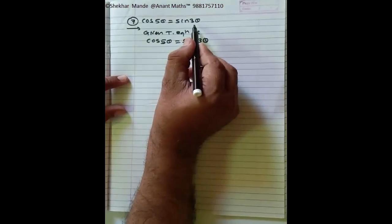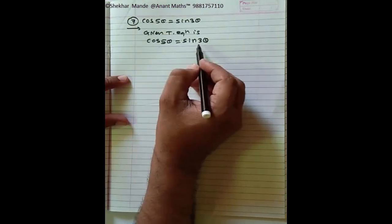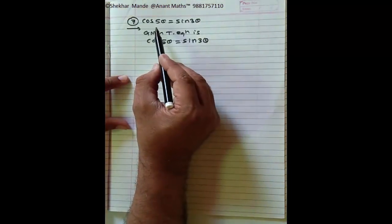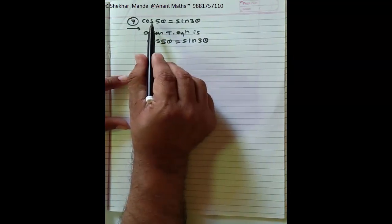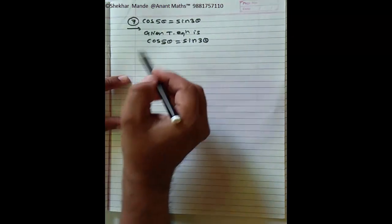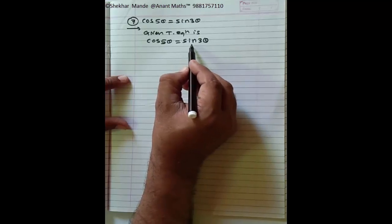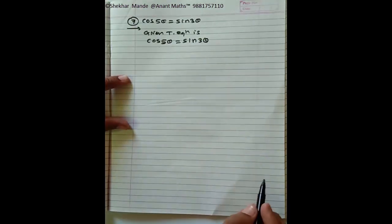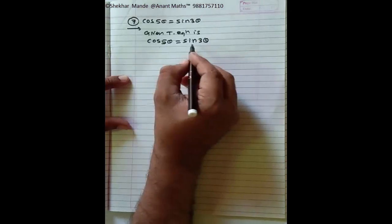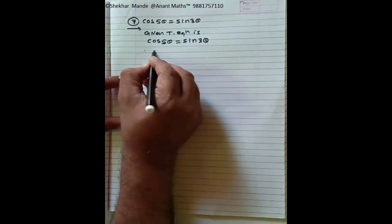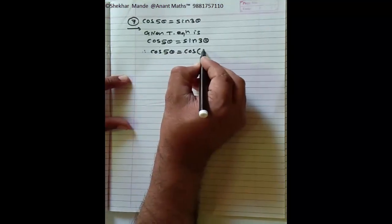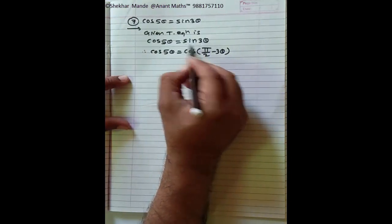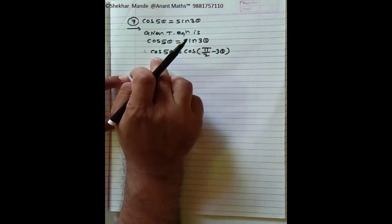The next example is cos 5θ = sin 3θ. The given trigonometric equation is cos 5θ = sin 3θ. This example is different — the left side is cos and the right side is sin. We use the identity sin θ = cos(π/2 − θ), so sin 3θ = cos(π/2 − 3θ). Therefore cos 5θ = cos(π/2 − 3θ), and sin has been converted to cos.